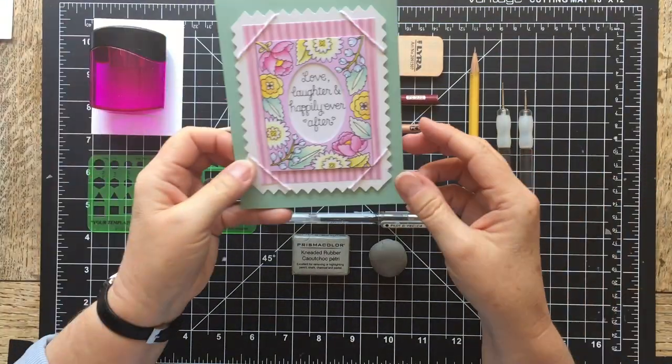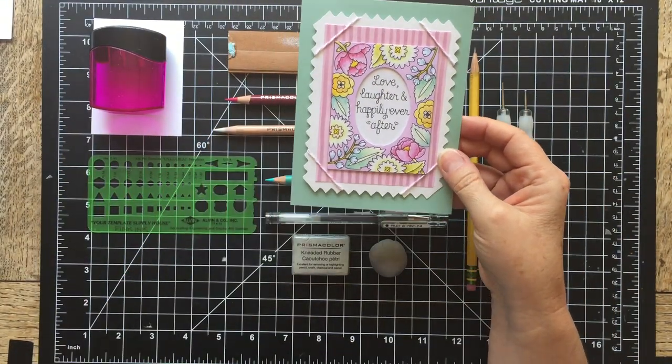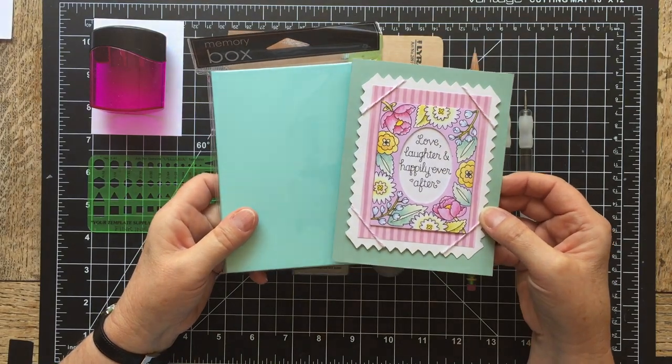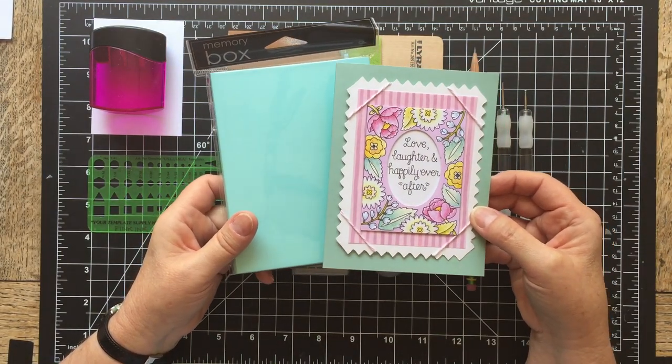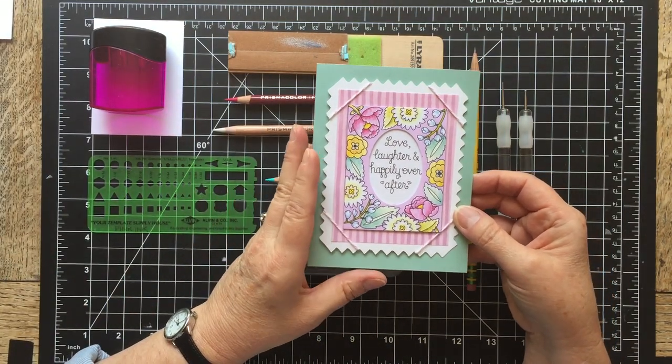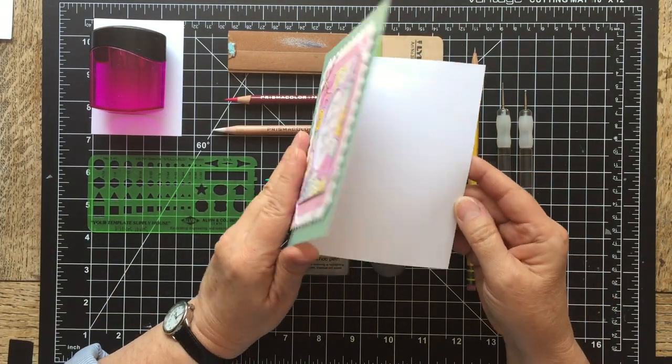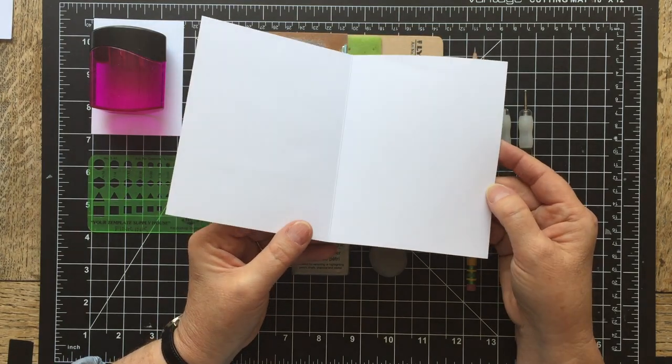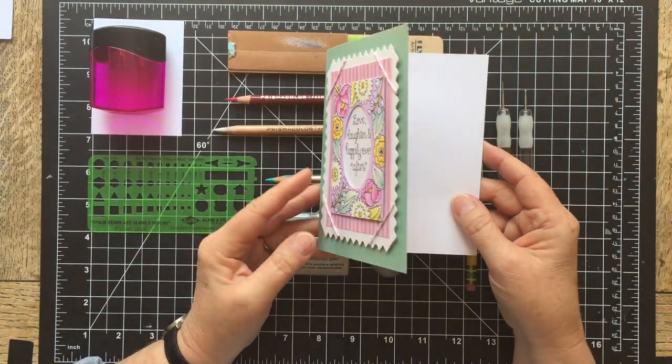All of my cards are made on Memory Box cardstock, and the reason I like Memory Box is because it has not only a nice range of colors, but all of the insides are white, which is great when you're actually writing a note to somebody.